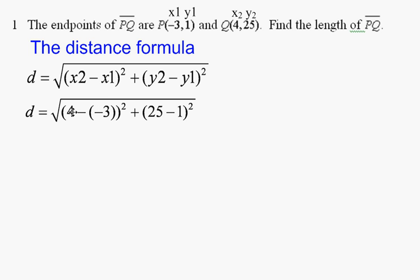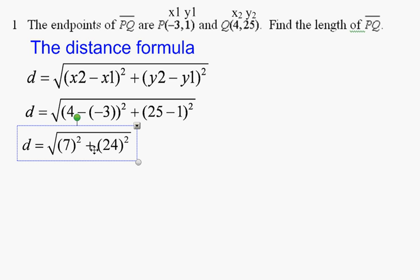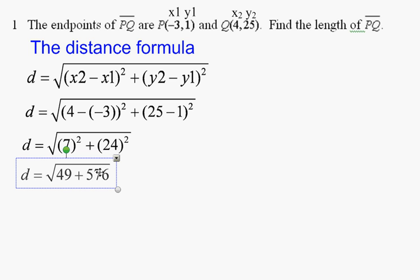So then that's going to be 4 minus negative 3. That's 7. 25 minus 1 is 24. 7 squared is 49. 24 squared is 576. Add them up, we get 625. The square root of 625 is 25. So our answer is 25.